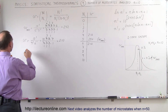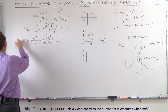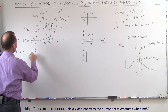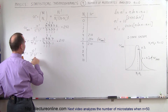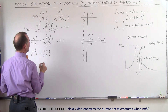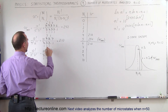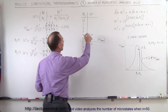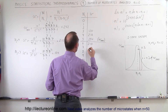Now for n1 equals 3: the number of microstates equals 10 factorial divided by 3 factorial times 7 factorial. That's 10 times 9 times 8, divided by 3 times 2 times 1. Simplifying: 8 divided by 2 is 4, 9 divided by 3 is 3, giving 12 times 10, which is 120. So there are 120 microstates when we have a population of 3 in the first state.